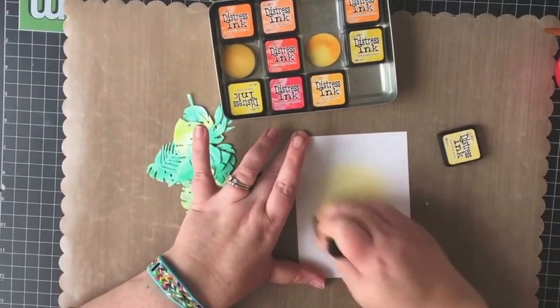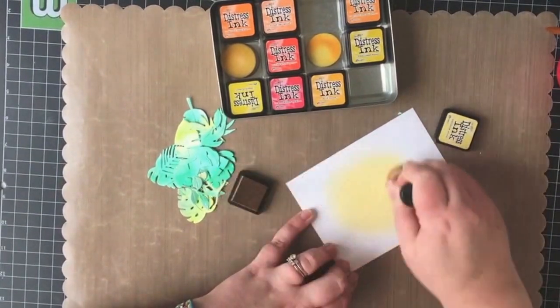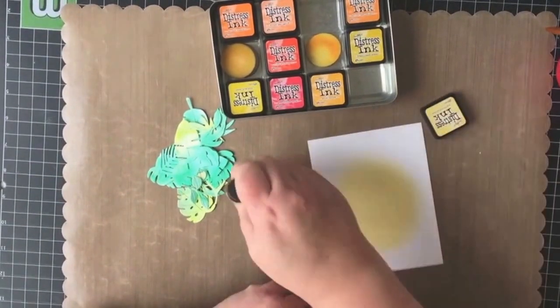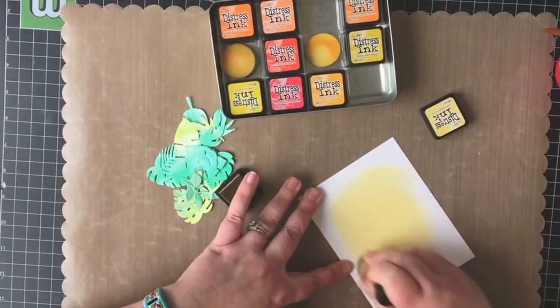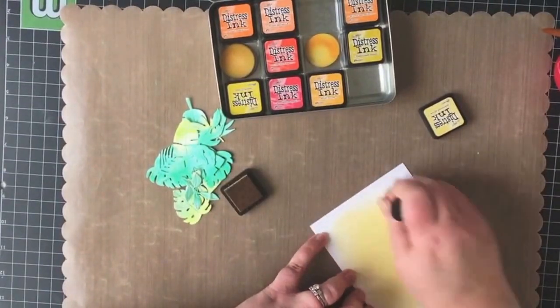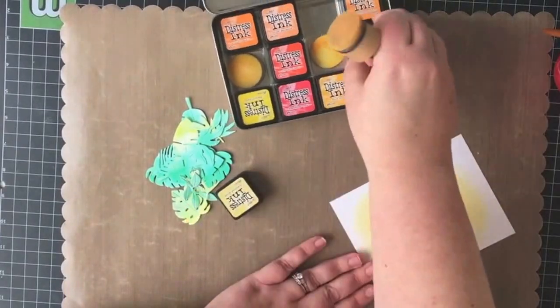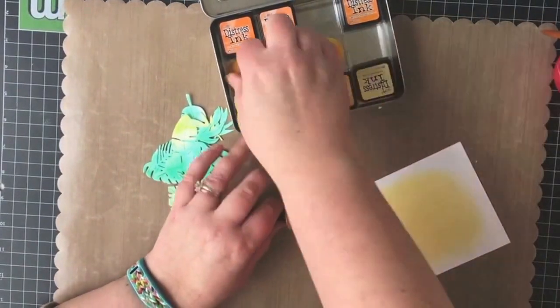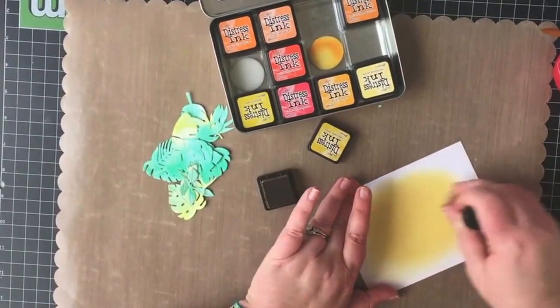Now I've moved on to creating a background and I am looking to add some distress ink to a panel of the distress specialty stamping paper in shades of kind of a yellowy gold. I'm starting off with scattered straw and then I'm going to add some fossilized amber and then a little bit of wild honey.